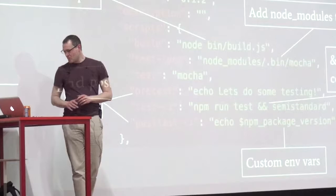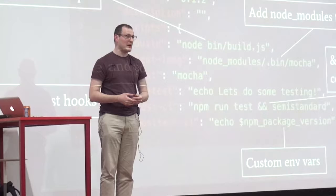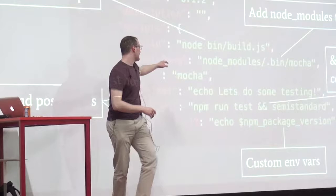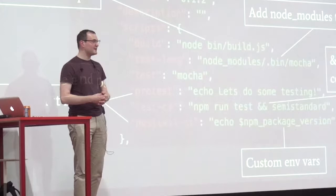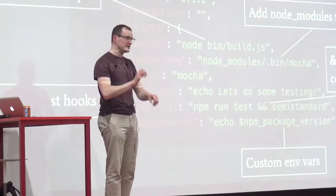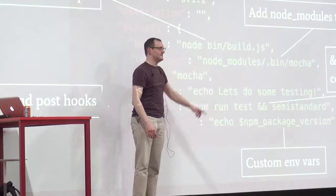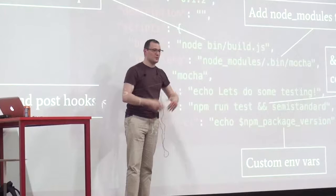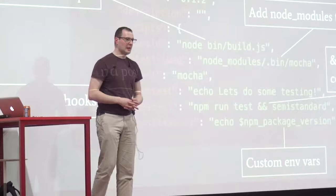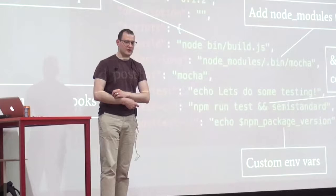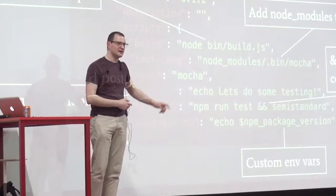NPM scripts are far more powerful than people sometimes give credit to. We've seen executing a remote script. When you download NPM packages, you commonly get command line tools out of the box. If your favourite testing framework is mocha or jasmine, it will come with a command line tool — stored inside node_modules/.bin. NPM scripts will add that to the path for you, so you can just type 'mocha' and let it run without specifying the full path.